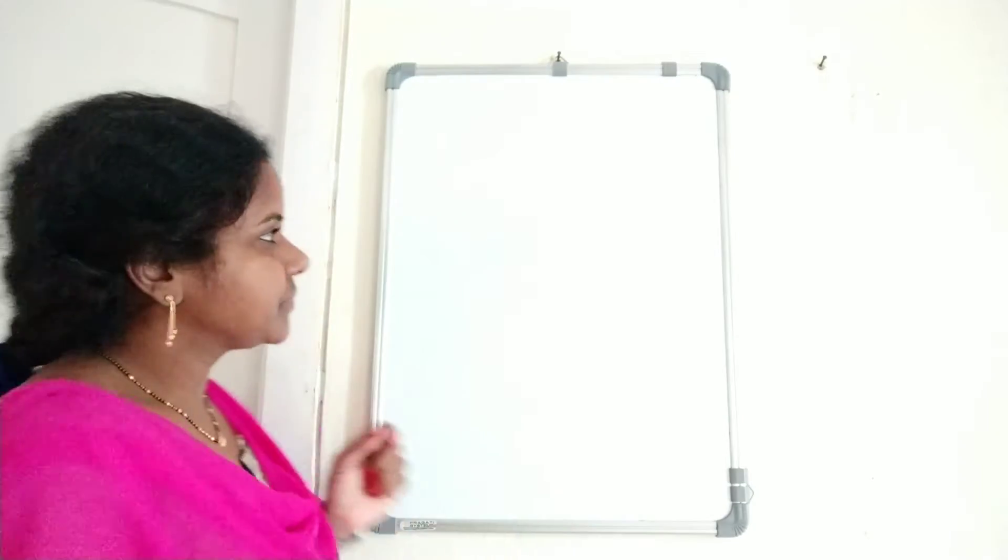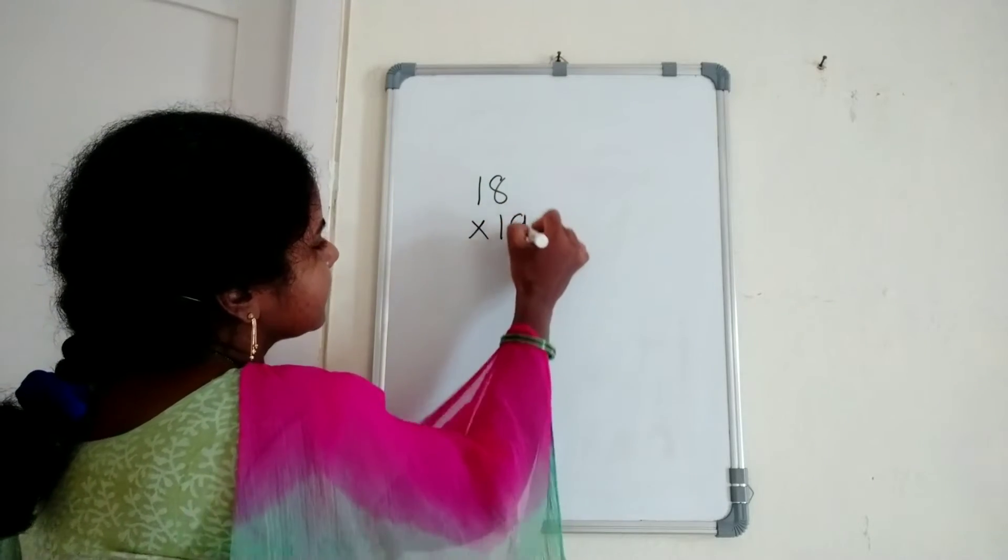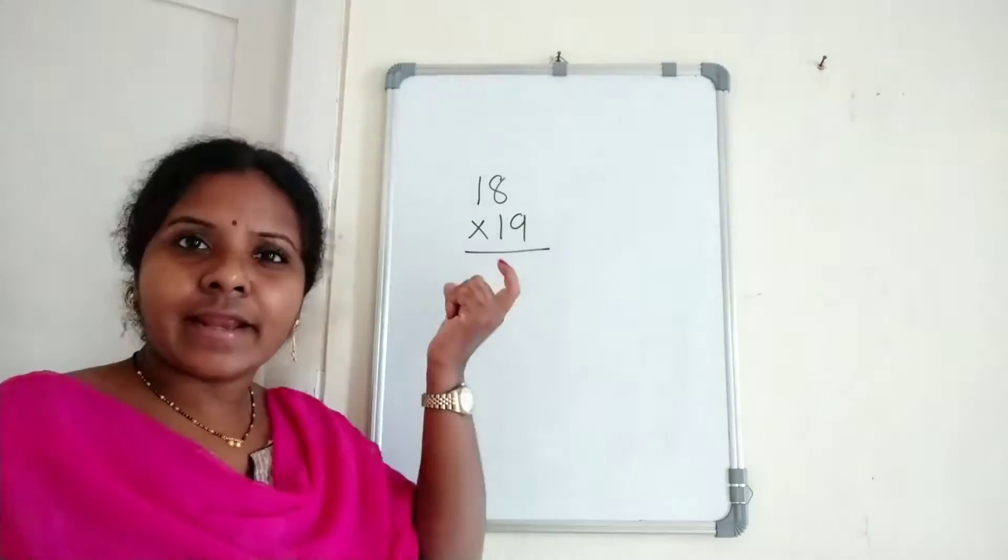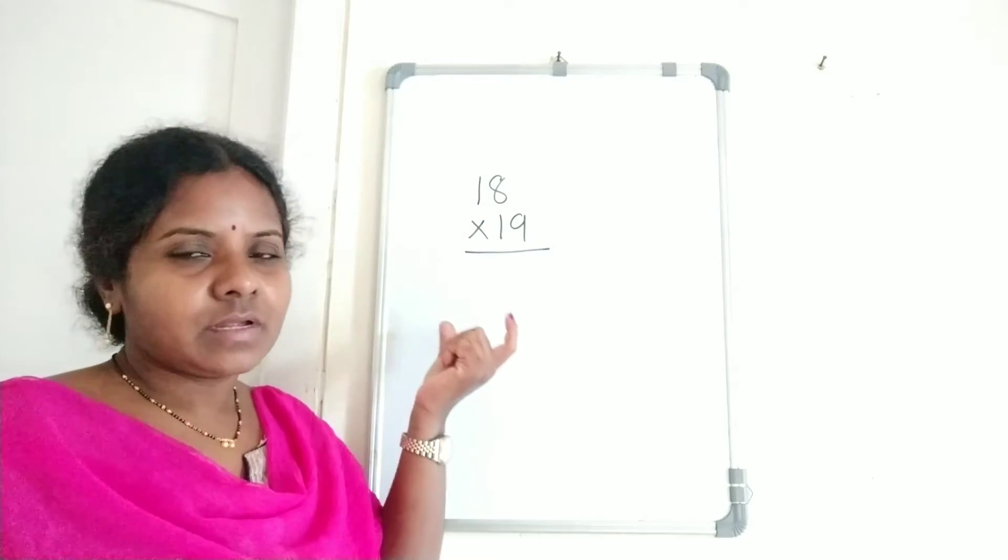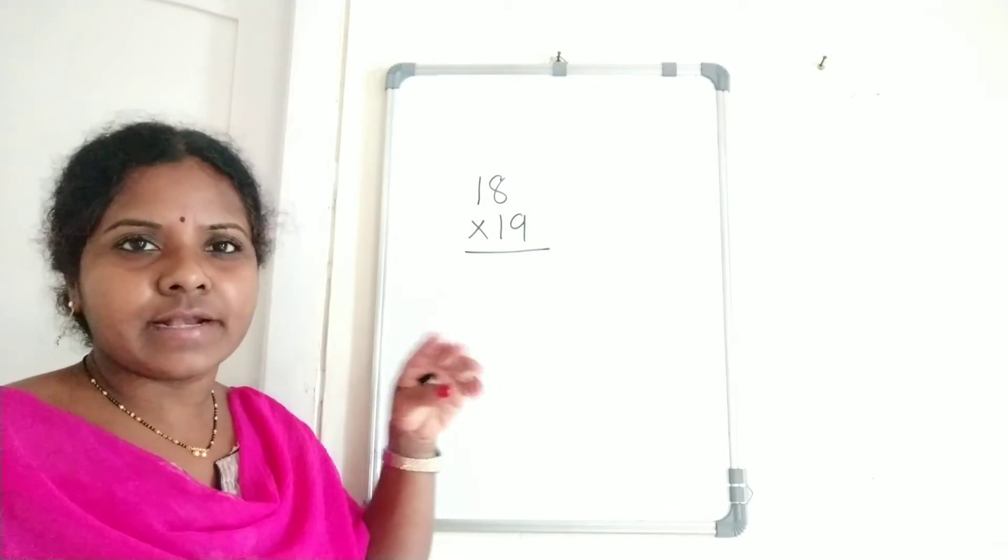What is the trick? Suppose 18 times 19. See, this method works for 12 to 19 tables up to 19 steps.